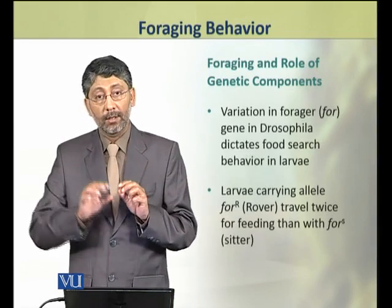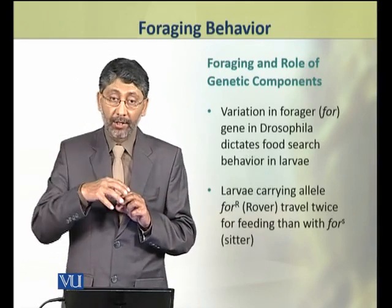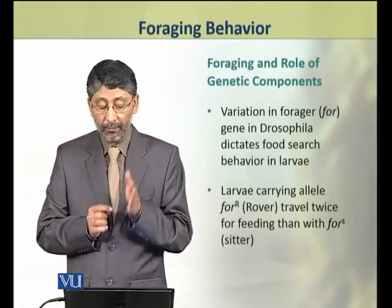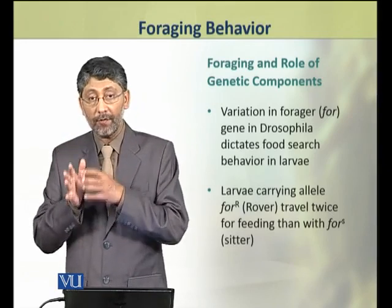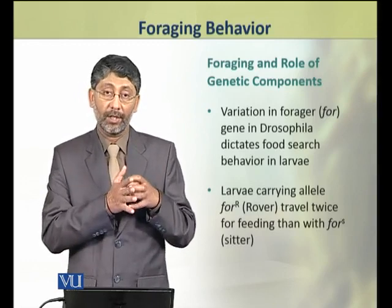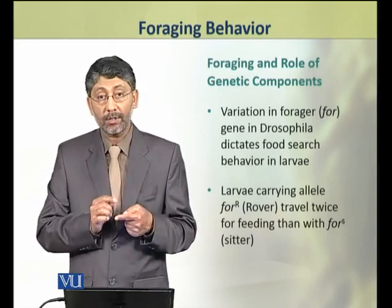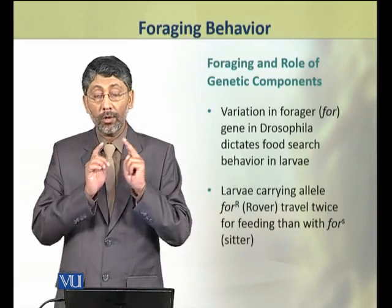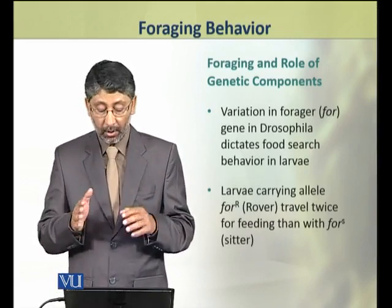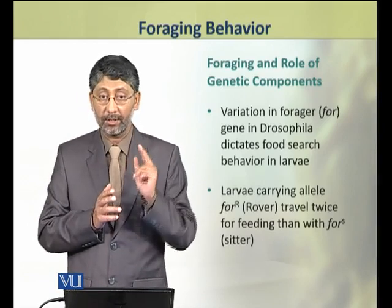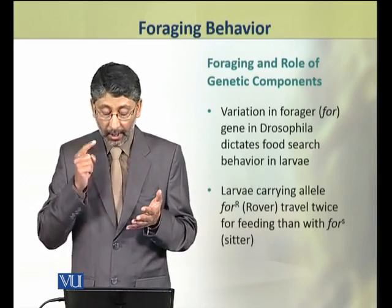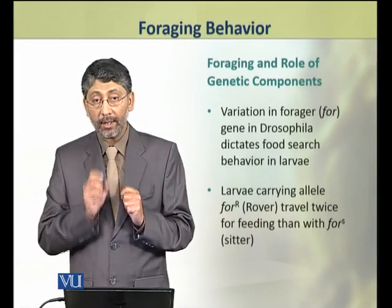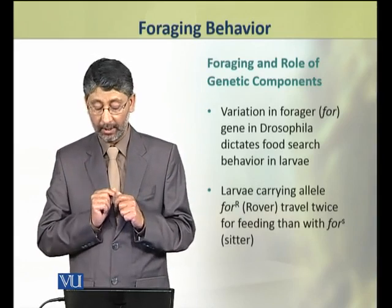The role of genetic basis, evolution, and natural selection in foraging behavior becomes very evident when we look at Drosophila, in which a variation is found in a gene called the forager gene. This forager gene dictates food search behavior in their larvae. In these larvae, two types of variations of this forager gene are found: one allele is the rover allele, represented by capital R, while the other is called the sitter allele, represented by small s.